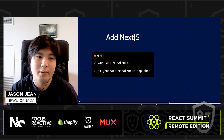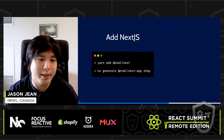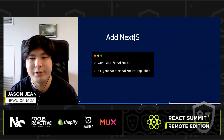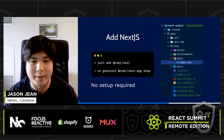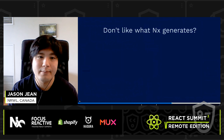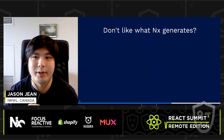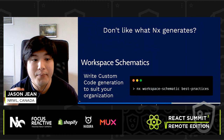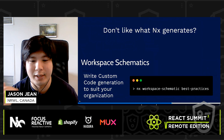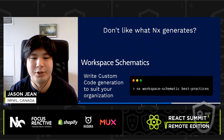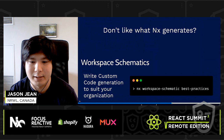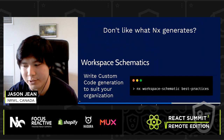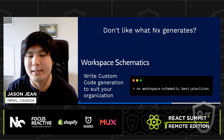You can also add things like Next.js. Using `yarn add @nrwl/next` and `nx generate @nrwl/next:app shop`, you can generate a new shop app in the same repo as the cart application with little setup — Next.js is fully configured and ready to go. What if you don't like what NX generates? You can write workspace schematics, which are custom code generation that suits your organization using NX workspace best practices. This lets your organization stay consistent by generating code that implements the best practices you want.